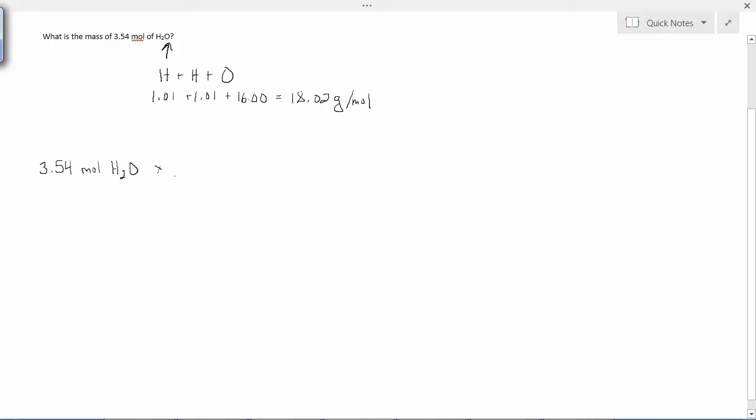So 3.54 moles of water - we're going to let unit conversions handle this. Grams of water needs to be in the numerator so that moles of water can be in the denominator and therefore be eliminated from the problem.